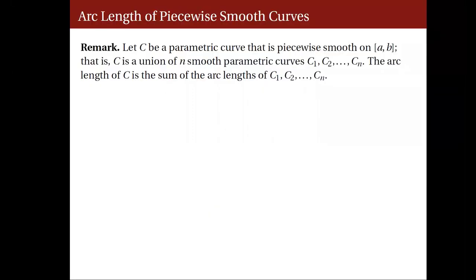Let's consider a parametric curve C that is piecewise smooth on the closed interval [a, b]. When we say piecewise smooth, we mean C is a union of n smooth parametric curves C1, C2, up to C sub n. We can obtain the arc length of C by taking the sum of the arc lengths of those n smooth parametric curves.